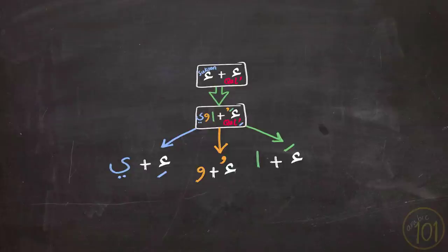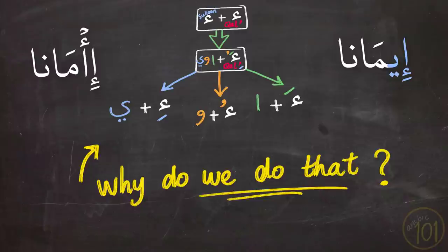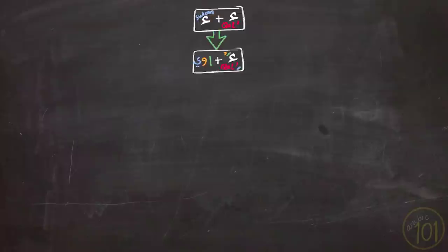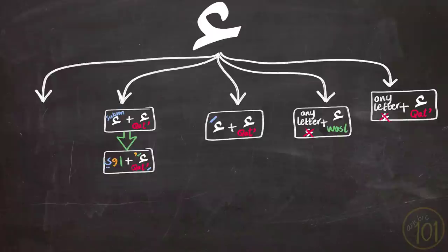That's why the word 'Aamanoo,' which you don't see in the Quran in that form, turns into 'Aamanoo' because the first Hamza has Fatha and so the second Hamza turns into an Alif. For the word 'Iimaan,' it becomes 'Iimaan' because the first Hamza had Kasra, so the second Hamza turned into Yaa. And 'Ootoo' is pronounced as 'Ootoo' because the first Hamza had Dhamma, making the second Hamza turn into Waaw. This is a very commonly used rule found throughout the Quran.